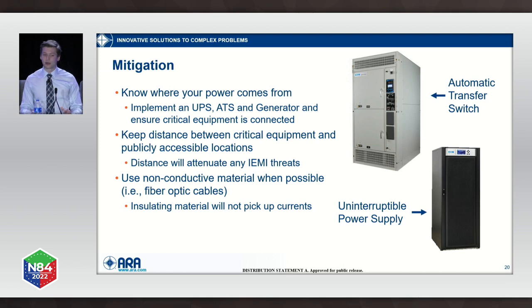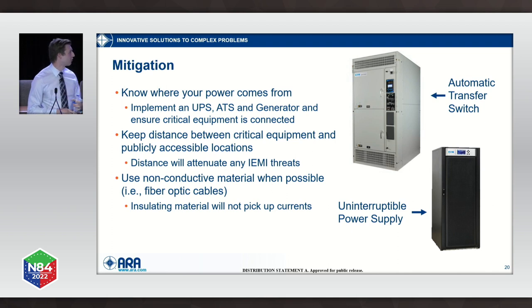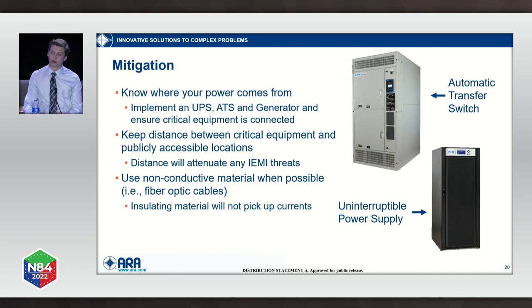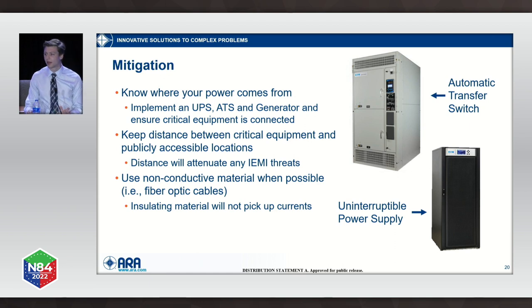Even if you don't want to implement hardcore shielding approaches, there are ways to mitigate the effect EM would actually have on your facility. Data centers are familiar with having backup generators, UPS systems, and automatic transfer switches — but how often are drills conducted? Do you know this equipment is functional? Do people know what to do if your automatic transfer switch doesn't switch, and is that person contactable when it happens? It's also important to keep physical distance between your important equipment and any publicly accessible location, which really mitigates a lot of IEMI effects. It's also helpful to use non-conductive material where possible — fiber optic cables are strongly recommended, or if you have to use Ethernet cords, keep them as short as possible.